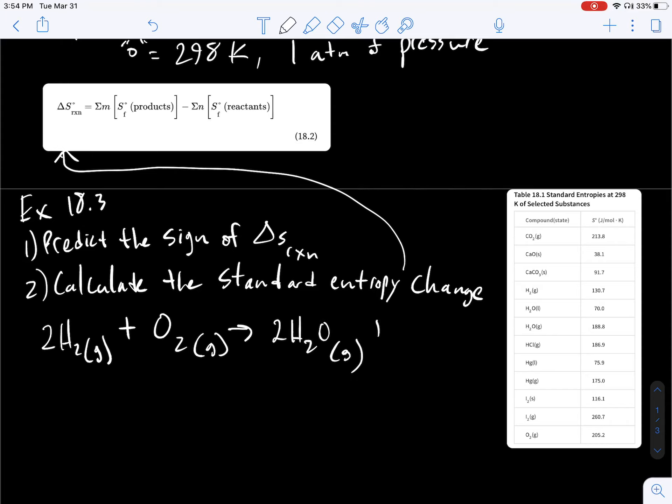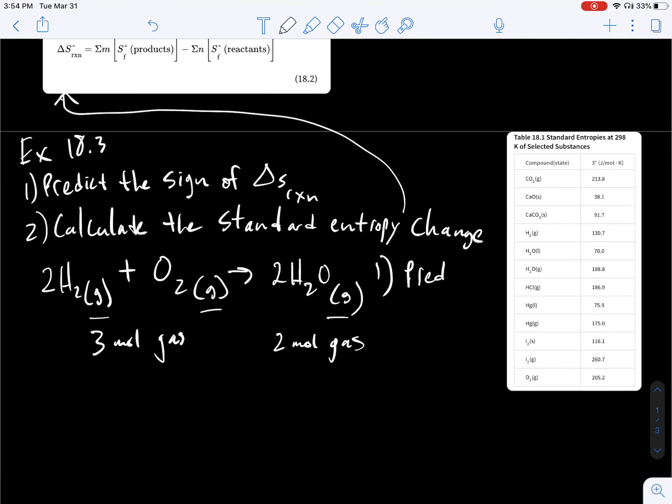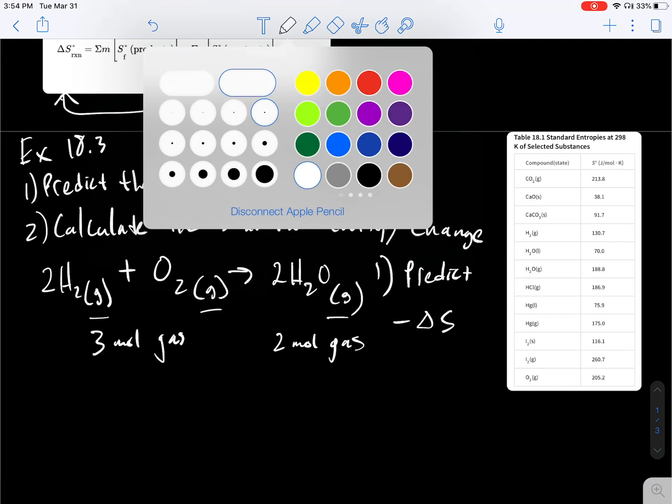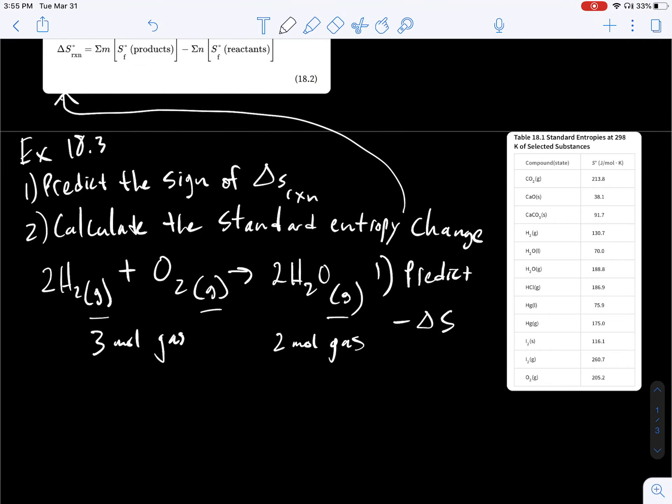So number one, what's the sign of the entropy value? As in overall going from this to this, are we getting more randomness, more entropy or less entropy? Well, for this, we need to look at states, but really in this case, the moles. We've got three moles of gas combining to two moles of gas. So we have less entropy. Overall, we should predict a negative delta S value. Overall, we lost randomness. We should have a negative value overall here.